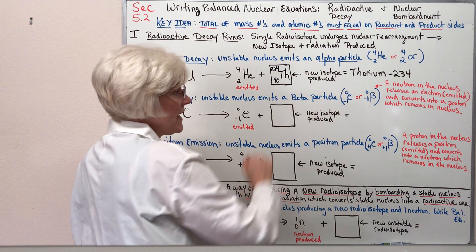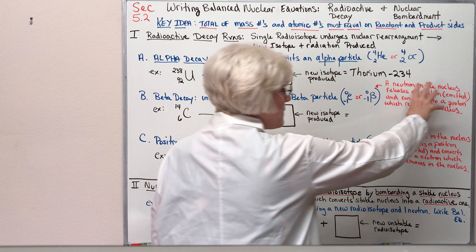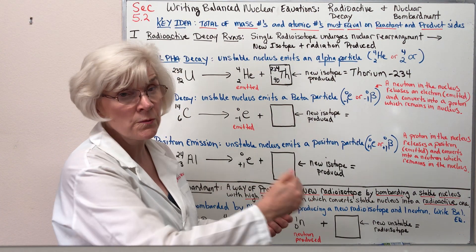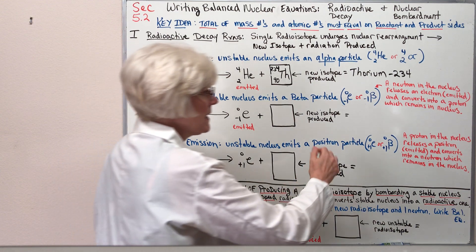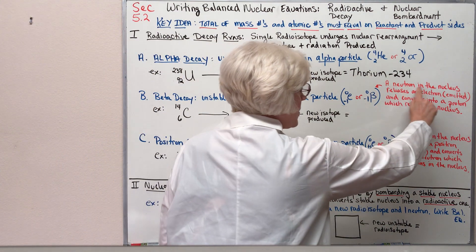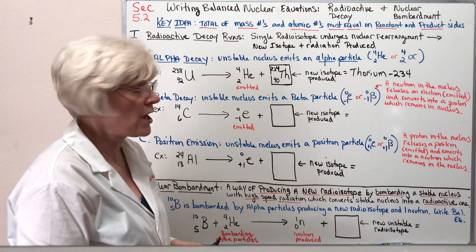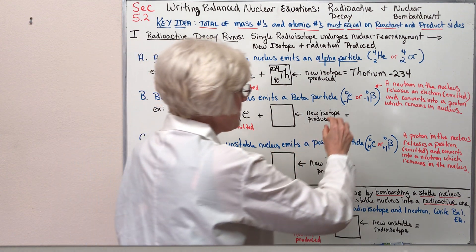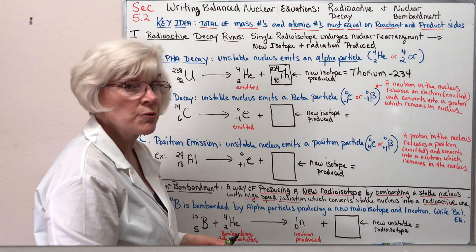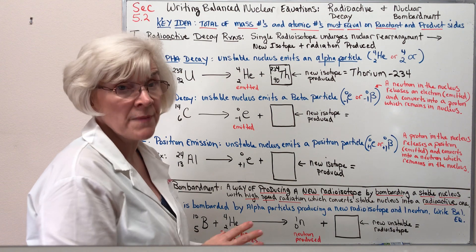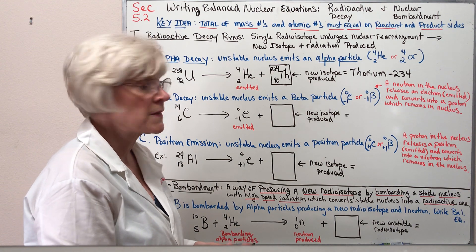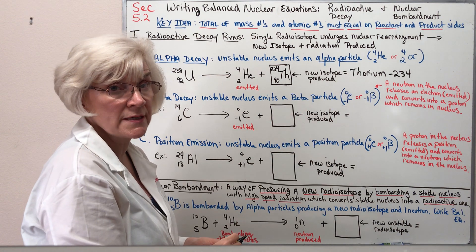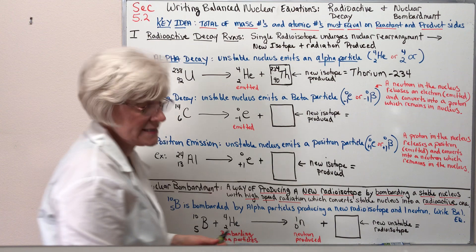In this beta decay process, the nucleus has too many neutrons relative to protons, so the nucleus is unstable. Therefore, a neutron in the nucleus releases and throws out an electron — a beta particle — and converts into a proton which remains inside the nucleus. So beta decay drops the neutron count by one and increases the proton count by one.